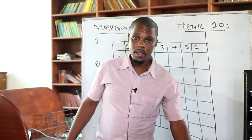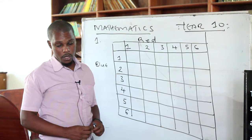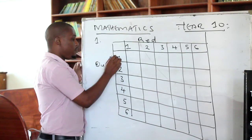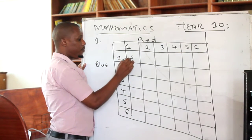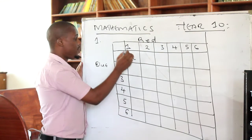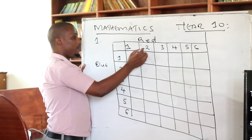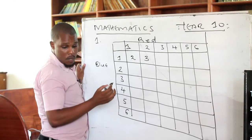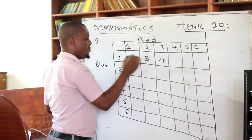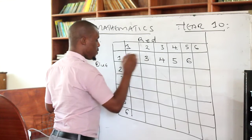We are told that the dice are thrown at the same time and the numbers showing on each die are added together. When we carry out that addition, we see: 1 plus 1 gives us 2; then 2 plus 1 gives us 3; then 3 plus 1 is 4; then 4 plus 1 is 5; then 5 plus 1 is 6; then 6 plus 1 gives us 7. Then for the next row: 1 plus 2 is 3; 2 plus 2 is 4; then 5; then 7; then 8.